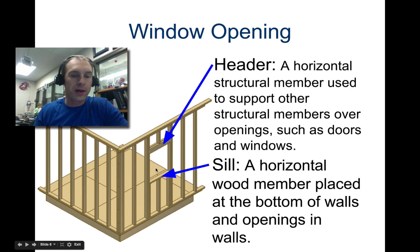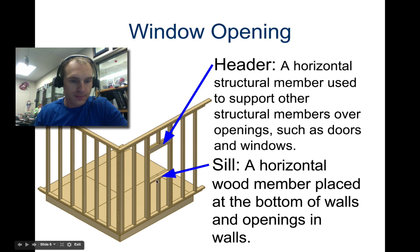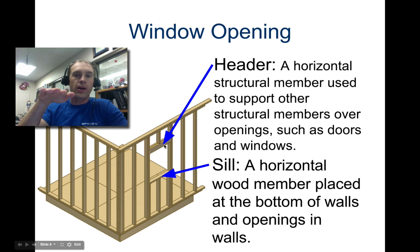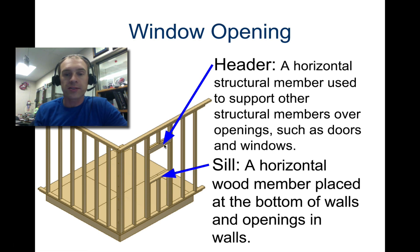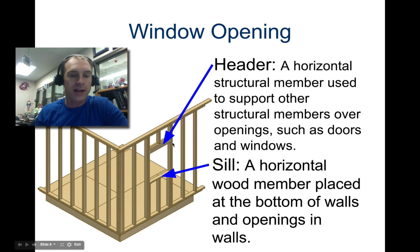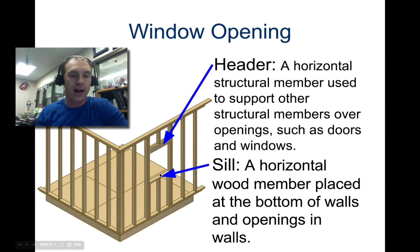The window opening has to be framed in — you don't cut it in later. The top part is called the header. The header is a two-by-four on end, and usually for a bigger window it'll be a two-by-six, or even a two-by-eight for a really large opening. That adds strength so that the ceiling doesn't crush down on the window and crack the glass.